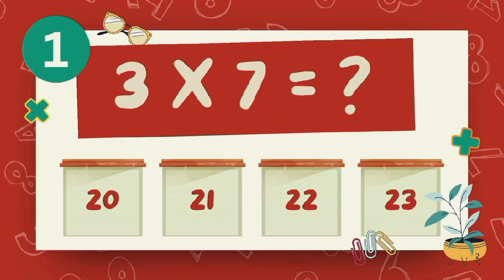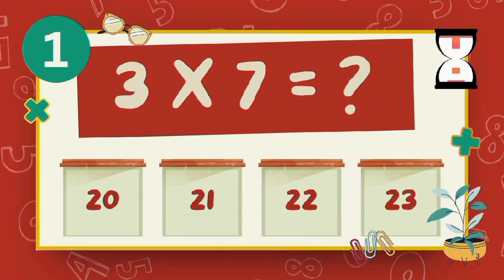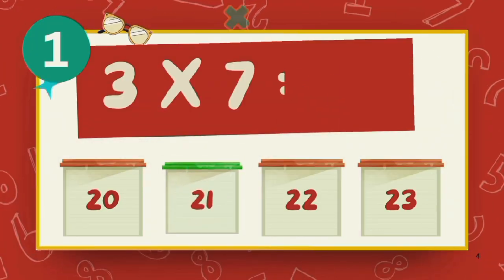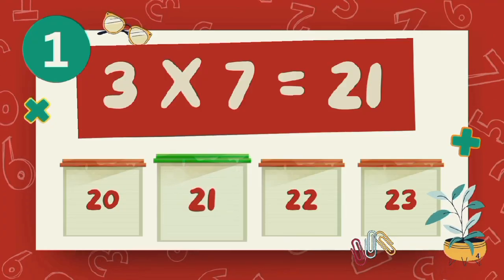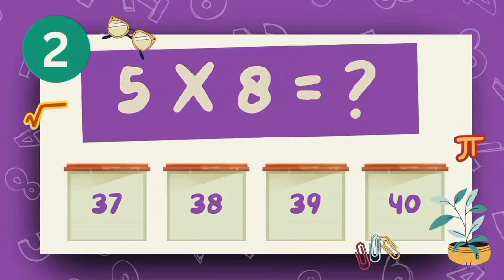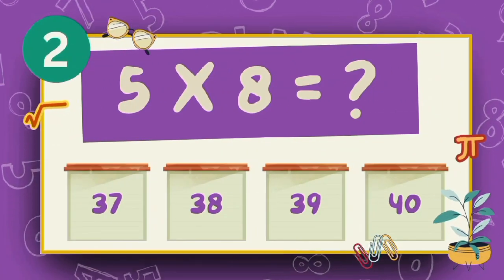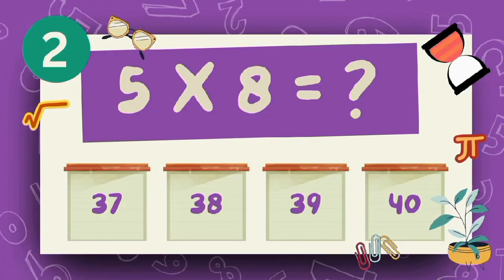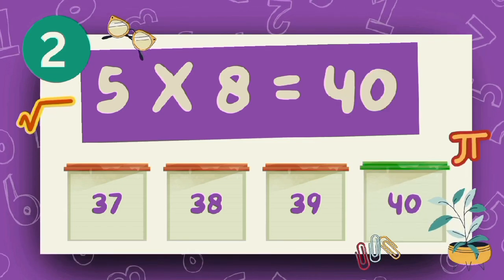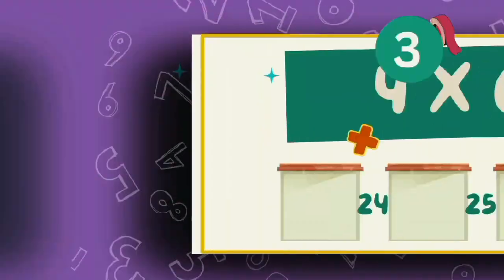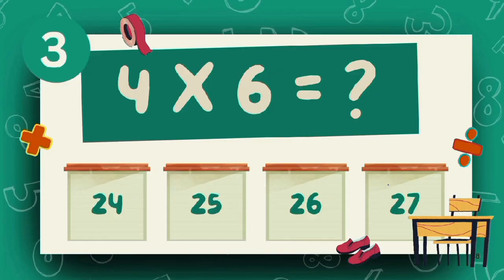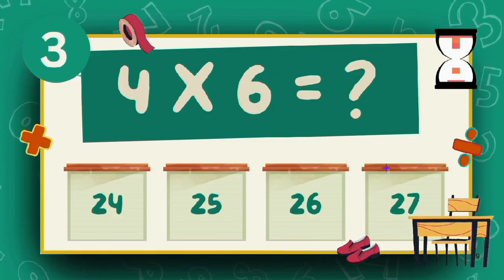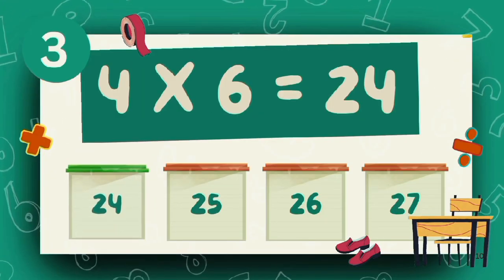What is 3 multiply 7? The answer is 21. What is 5 multiply 8? The answer is 40. What is 4 multiply 6? The answer is 24.